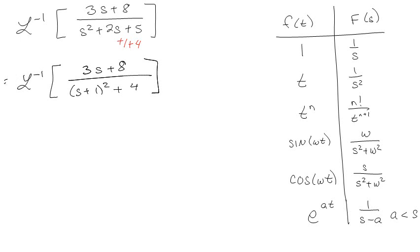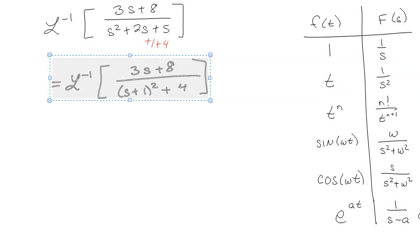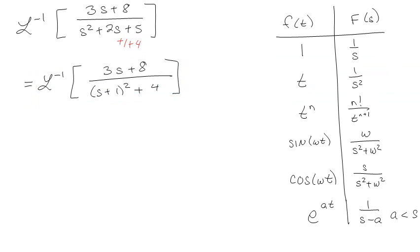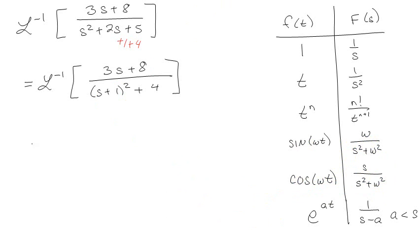Which means that I can essentially write the same thing, 3s plus 8 over s plus 1 quantity squared plus 4. Now, if I'm looking over here, if I'm going to do eventually the inverse Laplace transform of this, hopefully I can kind of look and I can see I'm going to be doing sines and or cosines, probably both. Also note that this is shifted. So anywhere that I would have an s on the bottom and an s on the top, right now I have s plus 1. So I have an s plus 1 on the bottom, so I'll need to have an s plus 1 on the top. So I'm going to go about seeing if I can make that happen.